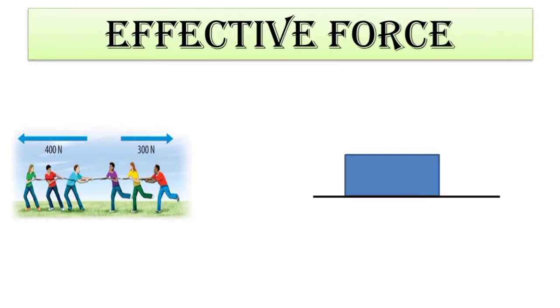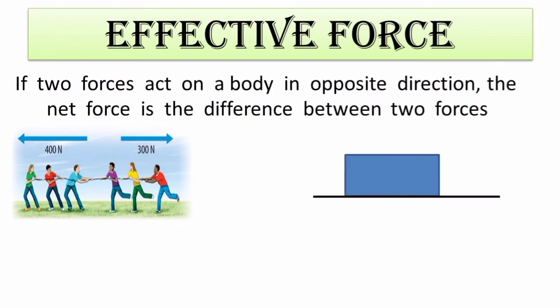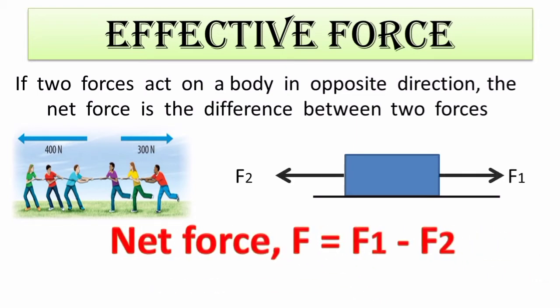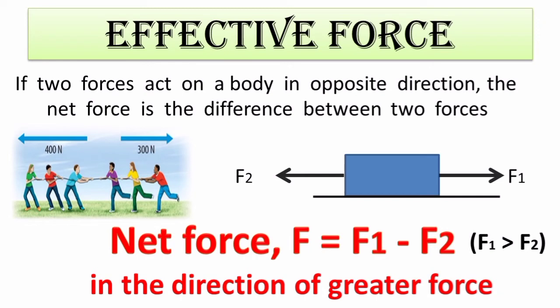When two forces are applied over an object from opposite directions, the total effective force is the difference between two forces. This can be explained mathematically as follows: on an object, F1 and F2 are two opposite forces acting on it, where F1 is greater than F2. Then the net force is F = F1 - F2, and the object moves in the direction of the greater force.